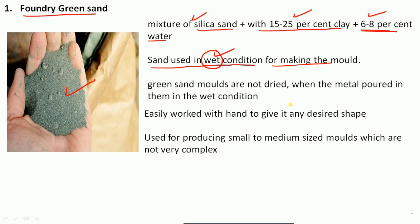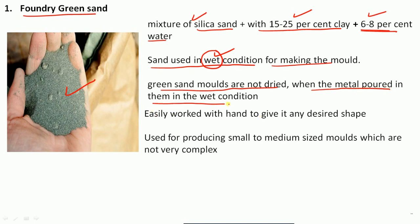Green sand molds are not dried when the metal is poured into them; the metal is poured in the wet condition. It is easily worked by hand to make desired shapes, and it is used for producing small to medium sized molds which are not very complex.